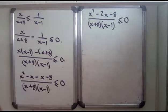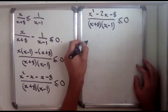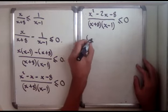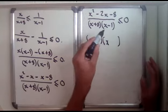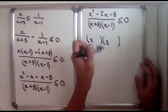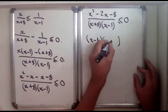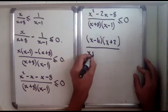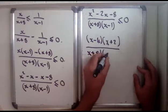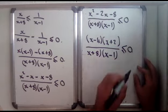Let's see if the top factorises, and if it does, then we're in business. x²-2x-8: 8 can be 4 and 2, and minus 4 plus 2 gives minus 2, so this factors as (x-4)(x+2), over (x+8)(x-1), is less than or equal to 0.